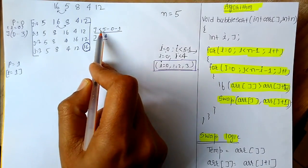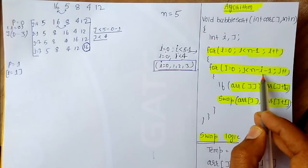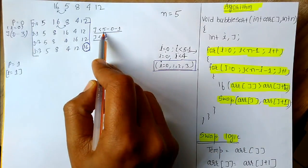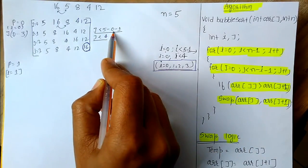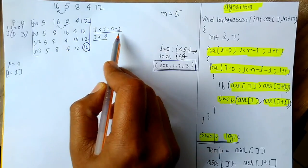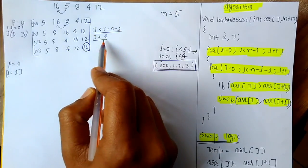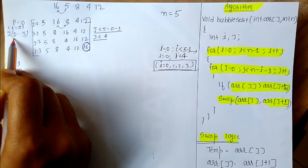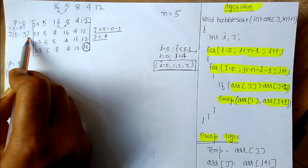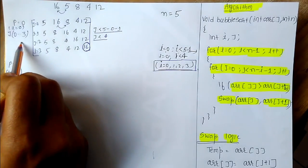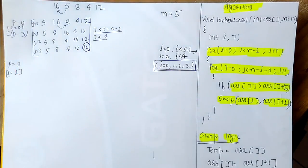j will run while j is less than n minus i minus 1. That is: n is 5, i is 0, so j is less than 5 minus 0 minus 1, which equals 4. So j will run from 0 to 3 — for i equal to 0, j runs from 0 to 3.